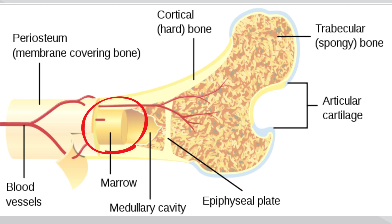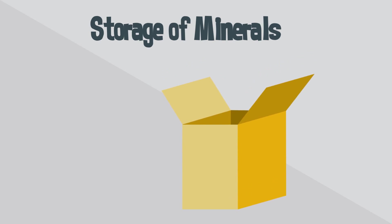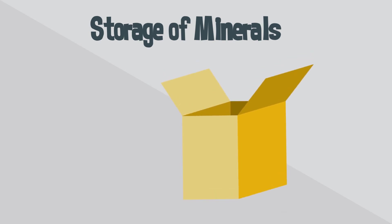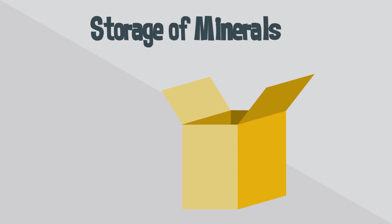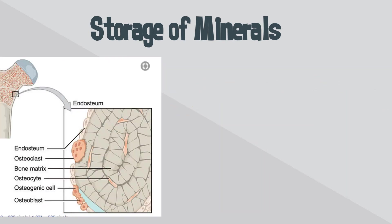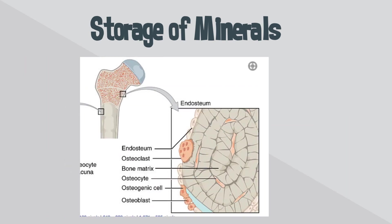Red blood cells, white blood cells, and platelets are all produced in this red marrow. On a metabolic level, bone tissue performs several critical functions. The bone matrix acts as a reservoir for a number of minerals important to the functioning of the body, especially calcium. These minerals incorporated into bone tissue can be released back into the bloodstream to maintain levels needed to support physiological processes.